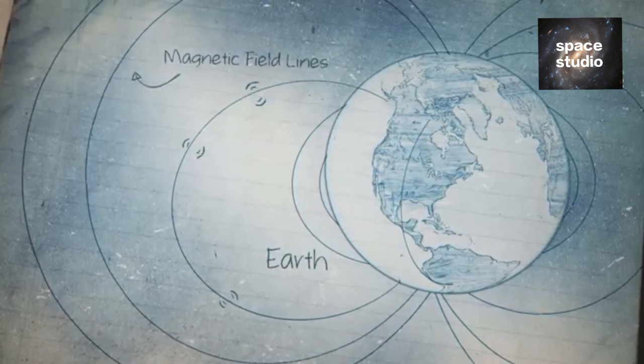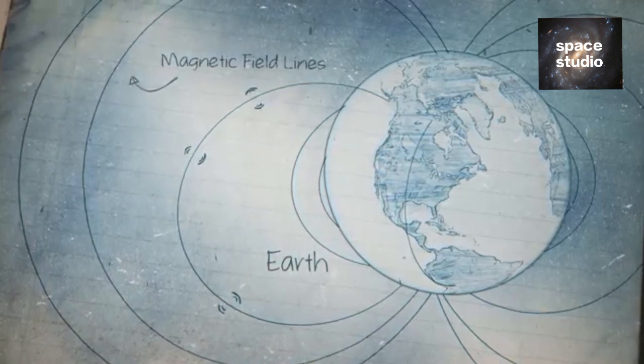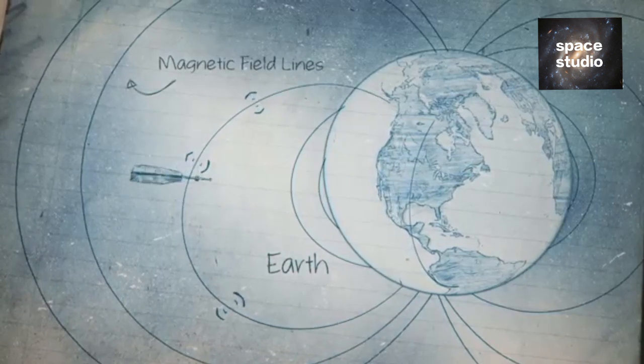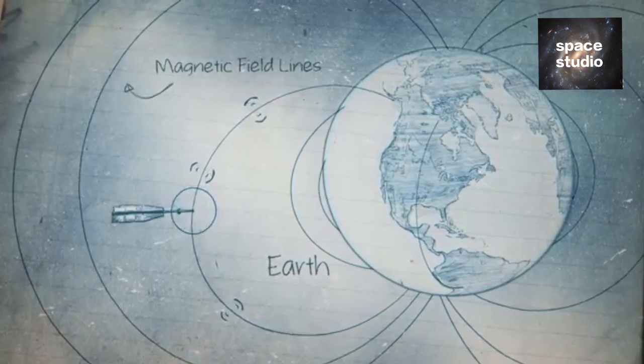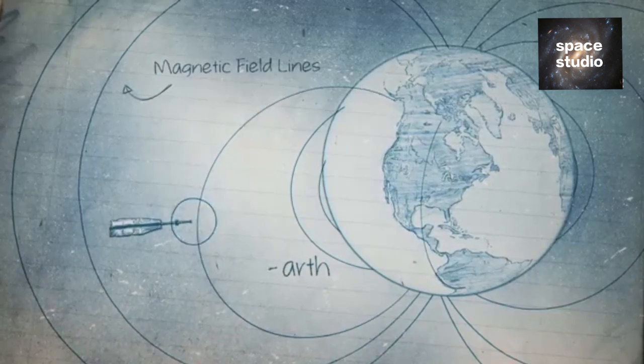The ever-changing field is full of fluctuations from many sources. Satellites observing these oscillations let scientists identify individual sources creating the magnetic field.